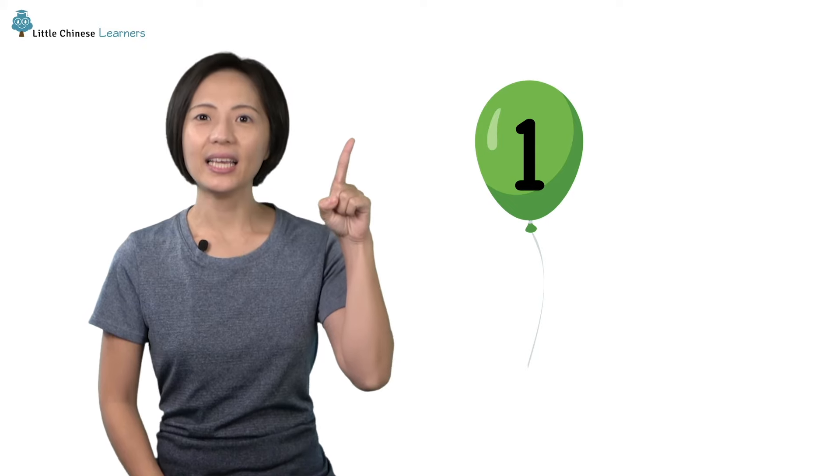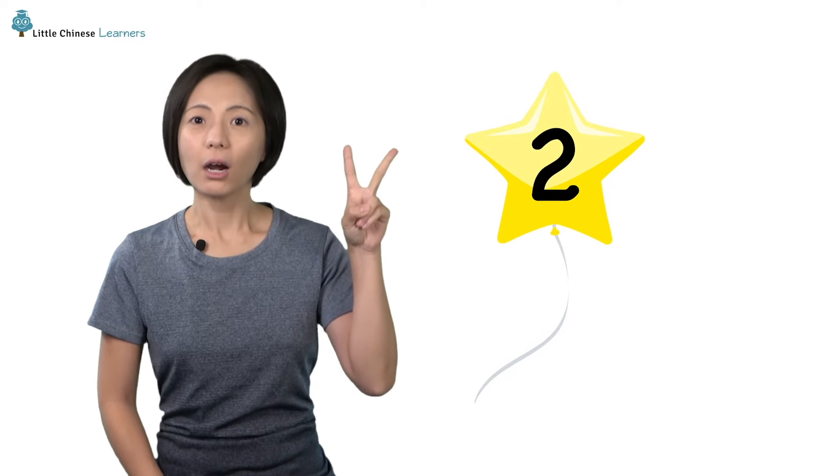Let's learn to count from one to five. For each number, I will repeat it twice and then you try it. Ready? Let's go. 一, 一. 二, 二. 三, 三. 四, 四. 五, 五. Great!